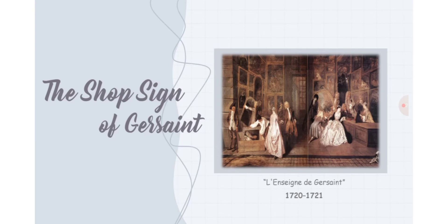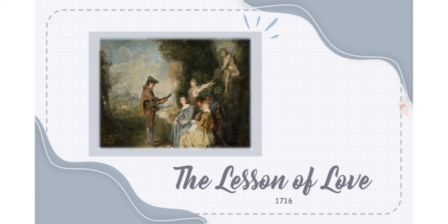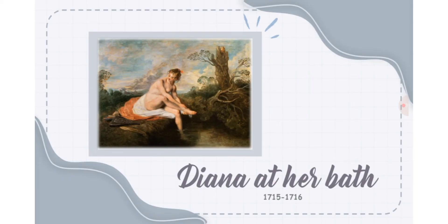Another masterpiece he made is the Enseigne de Gersaint, or the Shop Sign of Gersaint, 1720 to 1721. This painting is an oil on canvas in the Charlottenburg Palace in Berlin, and it is considered his last prominent work before he died. We also have The Lesson of Love, 1716, and another painting titled Diana at Her Bath, 1715 to 1716.